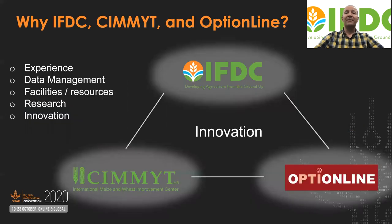CIMIT and IFDC have successful partnership records on crop modeling and field experiments. Their research facilities will generate field data, verify app recommendations, and strengthen the proposed project. Option Line and IFDC will generate a database of leaf images, varieties, fertilizer rates, nutrient content and ratio, and nutrient analysis techniques. This partnership will leverage the three organizations' expertise in crop modeling, data analytics, and artificial intelligence to develop an innovative app for fertilizer recommendations.